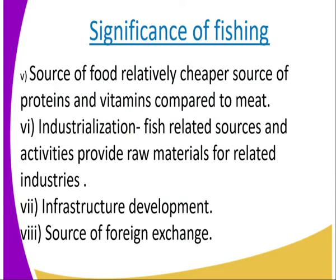Number five, fish is a relatively cheaper source of protein and vitamins compared to other types of meat — compared to beef, pork, and even chicken. Fish is relatively cheaper. Number six, industrialization: fish-related activities provide raw materials for related industries, so fish provides raw materials that support industrial development.